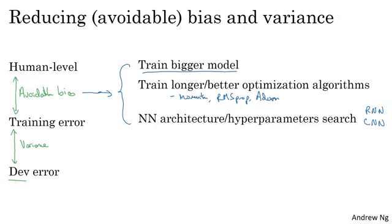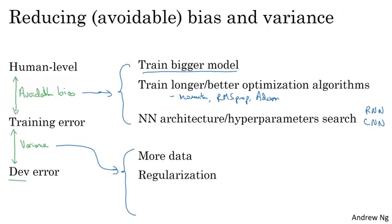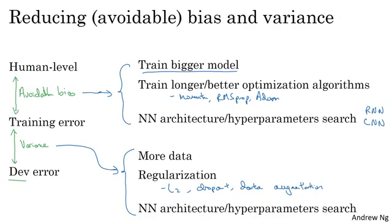To the extent that variance is a problem, techniques you could try include getting more data, since training on more data can help you generalize better to dev set data your algorithm didn't see. You could also try regularization, including L2 regularization, dropout, or data augmentation. Or once again, you can try various neural network architectural and hyperparameter searches to find an architecture better suited for your problem.